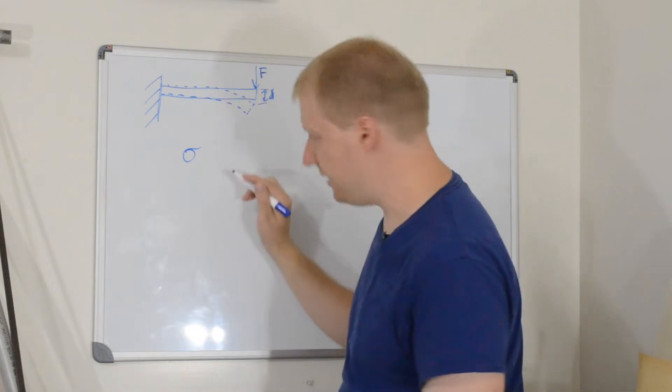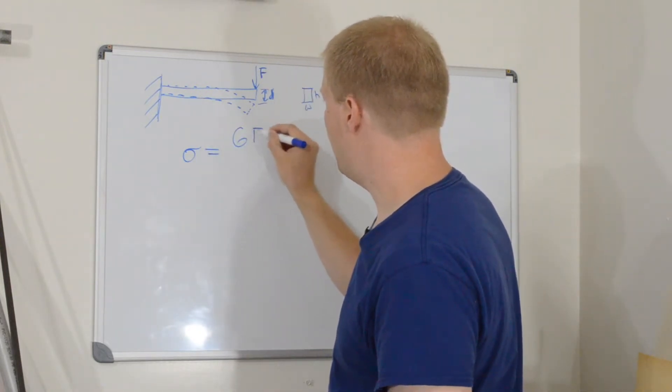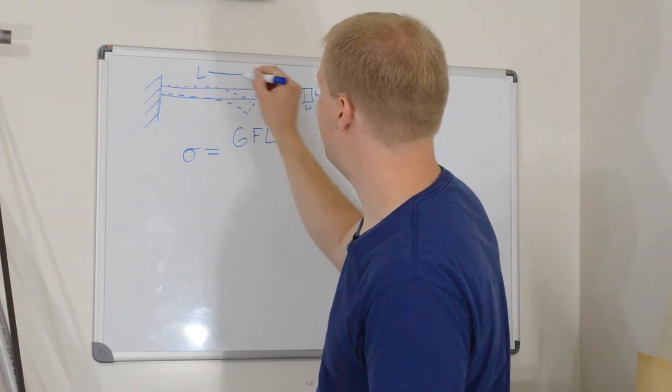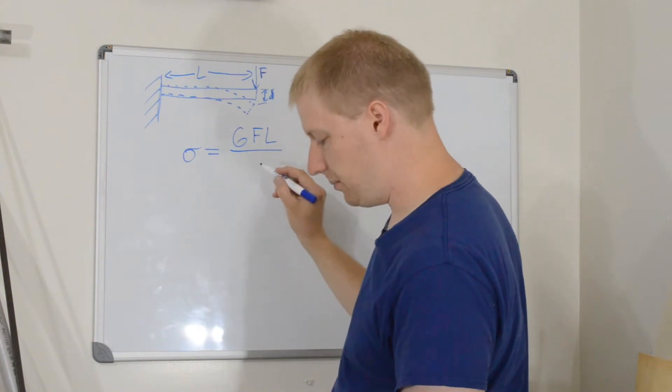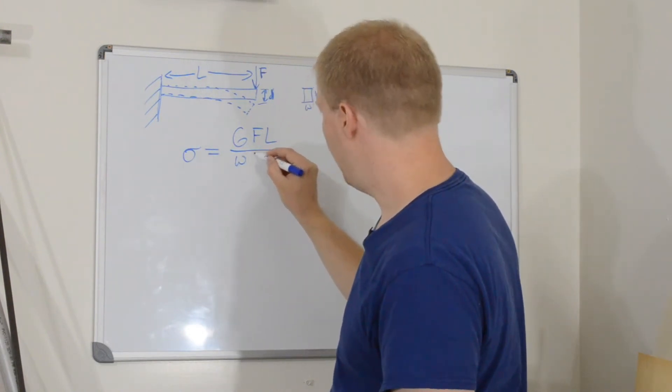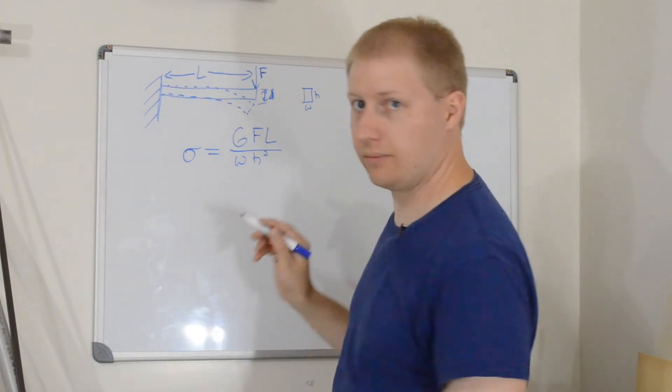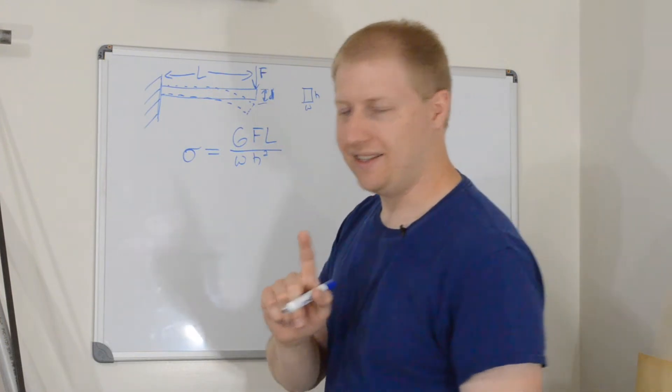This is the symbol for stress, equals 6 times the force times the length of the beam, that's this dimension here, divided by the width times the height squared. That's the formula. There won't be a test, don't worry about that. This will make sense.